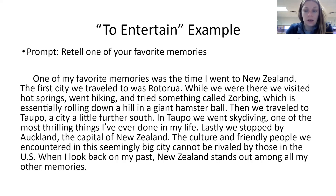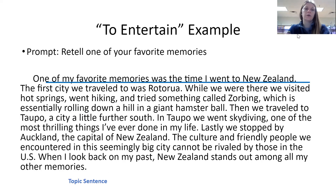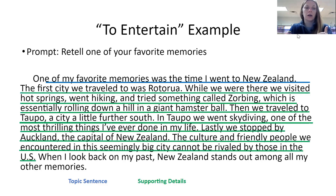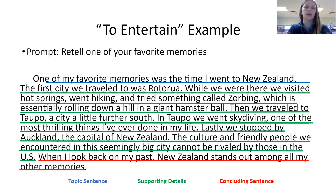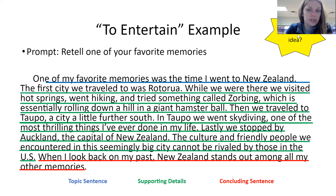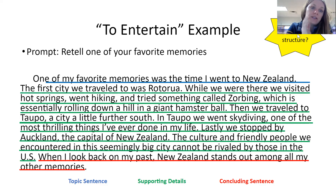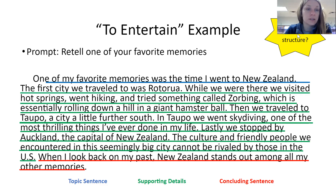Our main idea is a favorite memory of the time I went to New Zealand — that's our topic sentence. This paragraph describes three of the things that you did when you were in New Zealand. Our concluding sentence is: when I look back, New Zealand stands out among all my other memories. You're restating your topic sentence in the concluding sentence. The text structure: even though there are no dates, you could say it is chronological because it's going in order of time — where they went first, second, and third. But it could also just be description, describing the three places or events during that memory.